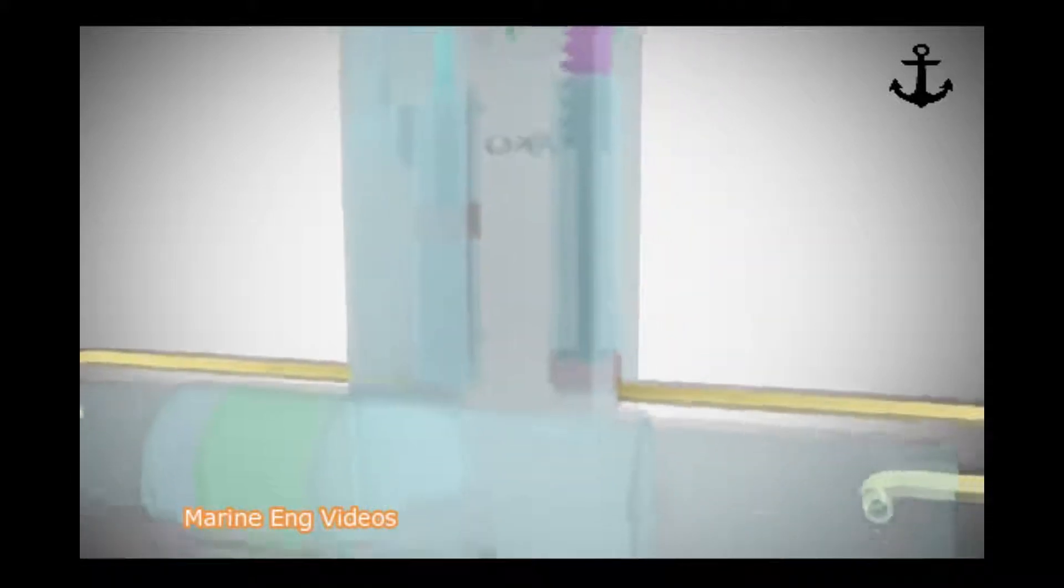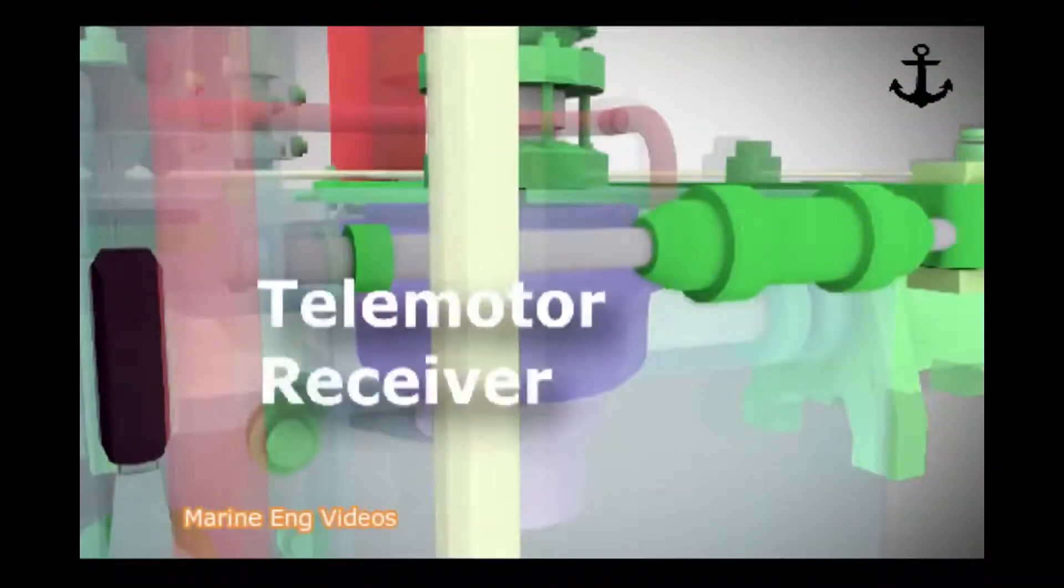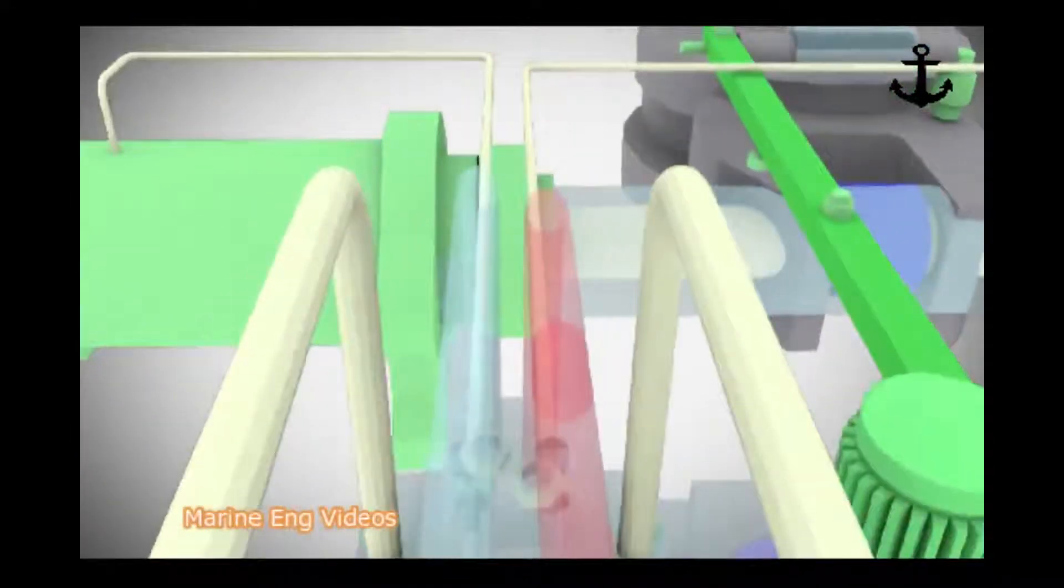Transmitter which move in opposite directions as the steering wheel is turned. The fluid is therefore pumped down one pipeline and drawn in from the other. The pumped fluid passes through piping to the receiver and forces the telemotor cylinder unit to move. The suction of fluid from the opposite cylinder enables this movement to take place.